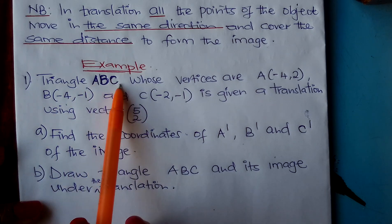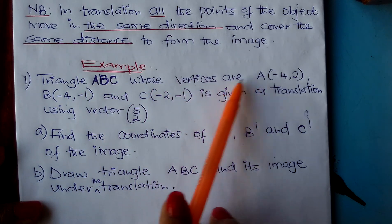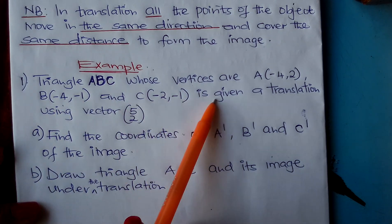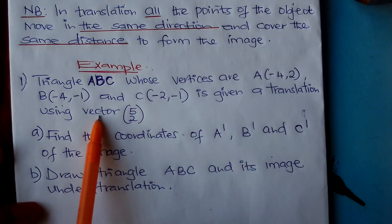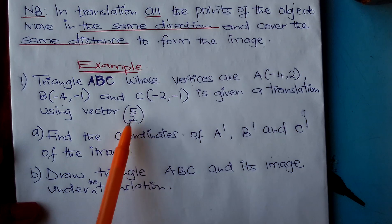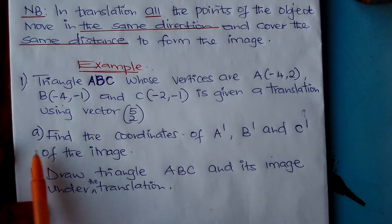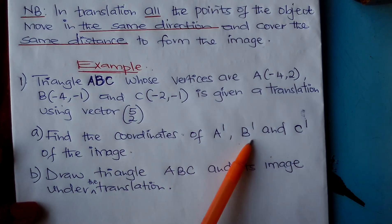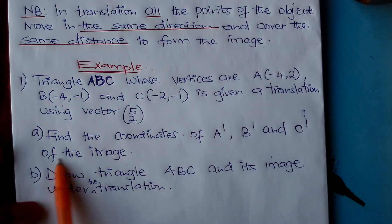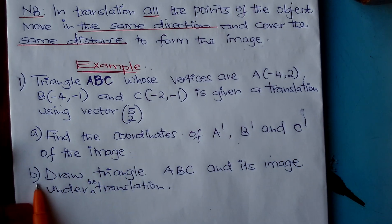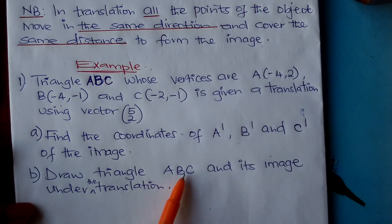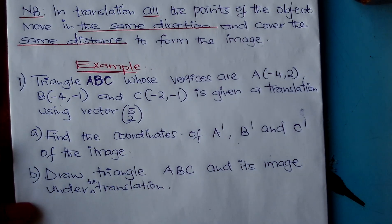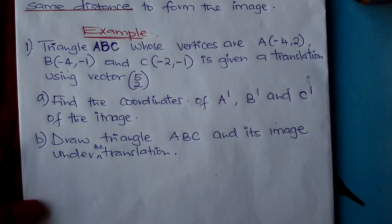Triangle ABC whose vertices are A, B and C is given a translation using vector (5, -2). The questions are: find the coordinates of A', B' and C' of the image, and draw the triangle ABC and its image under the translation.